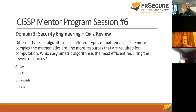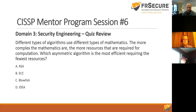Question six: Which asymmetric algorithm is most efficient, requiring the fewest computational resources? Options: RSA, ECC, Blowfish, IDEA. IDEA is a patented symmetric algorithm, so eliminate it. Elliptic Curve Cryptography (ECC) is designed for low-processing-power applications and is the correct answer.